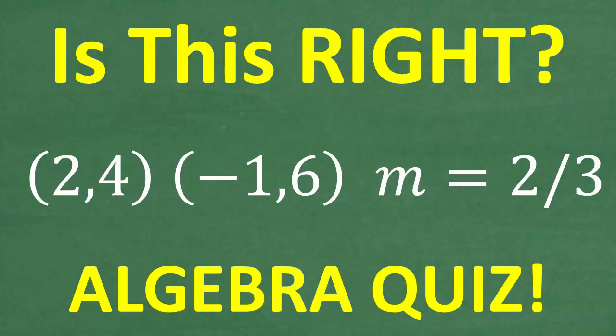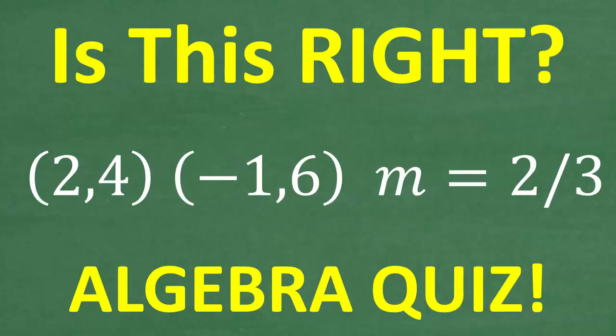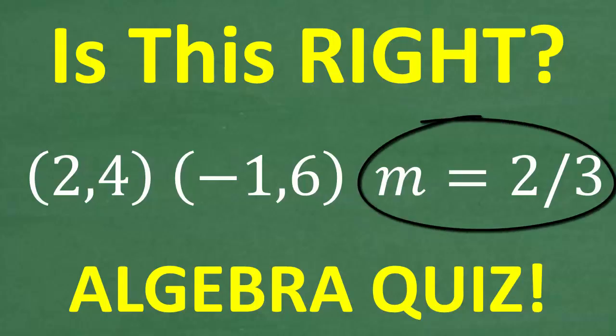So we have two points here. We have the point (2, 4) and the point (-1, 6). Now these are x, y points on the x, y plane. They are also referred to as ordered pairs or coordinates, but basically there are two points we can plot, and we want to know if the slope is 2/3.